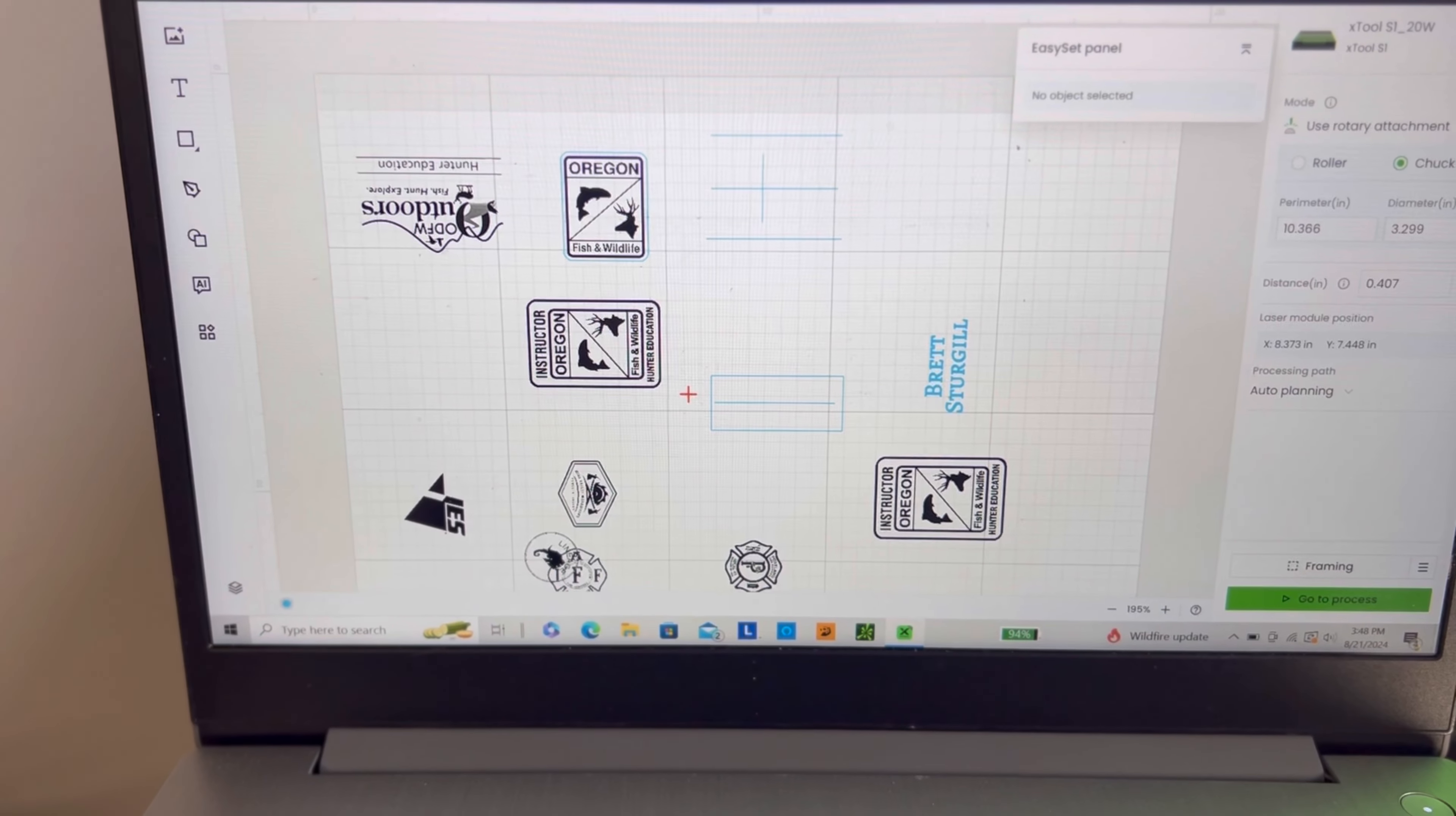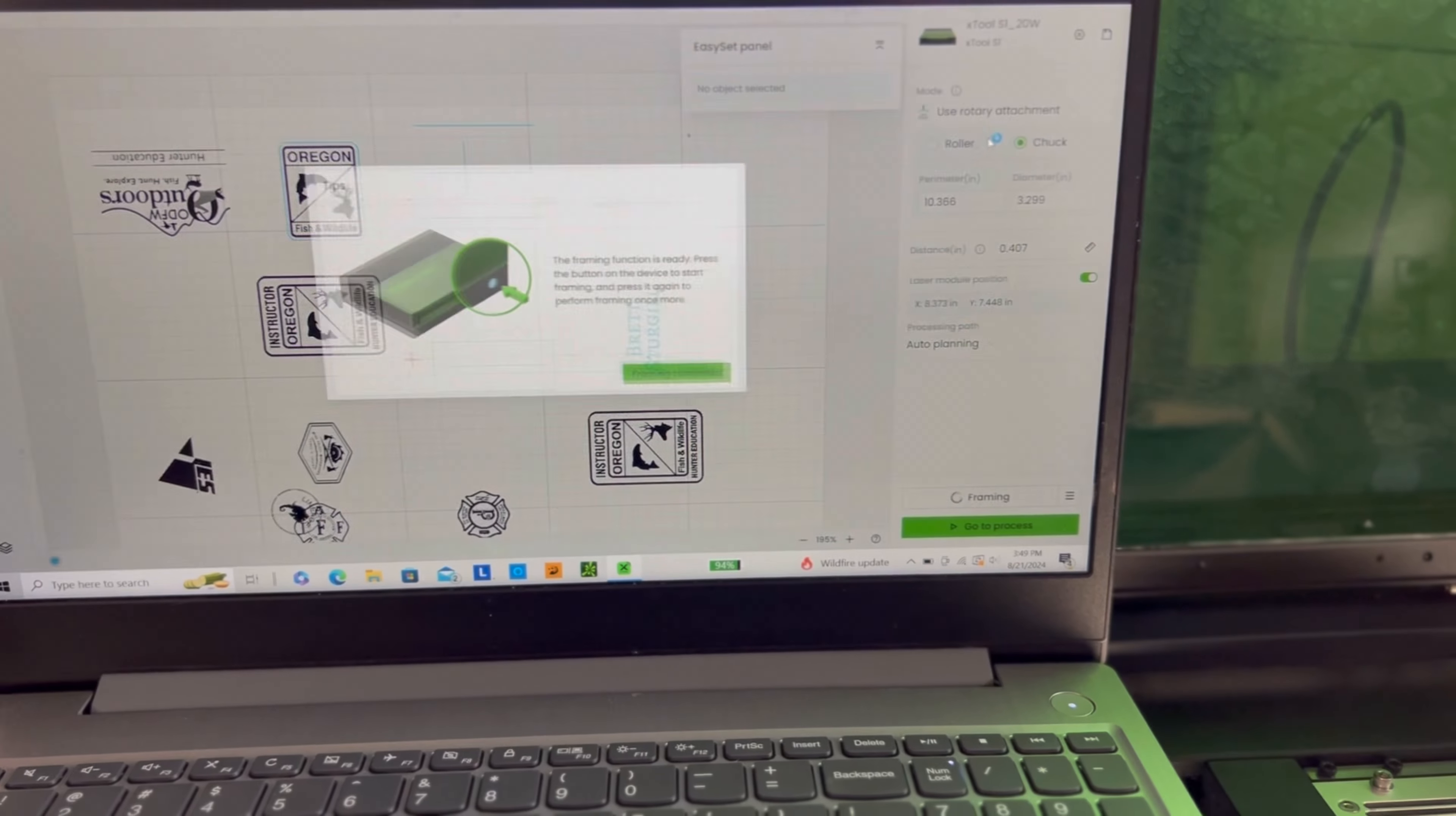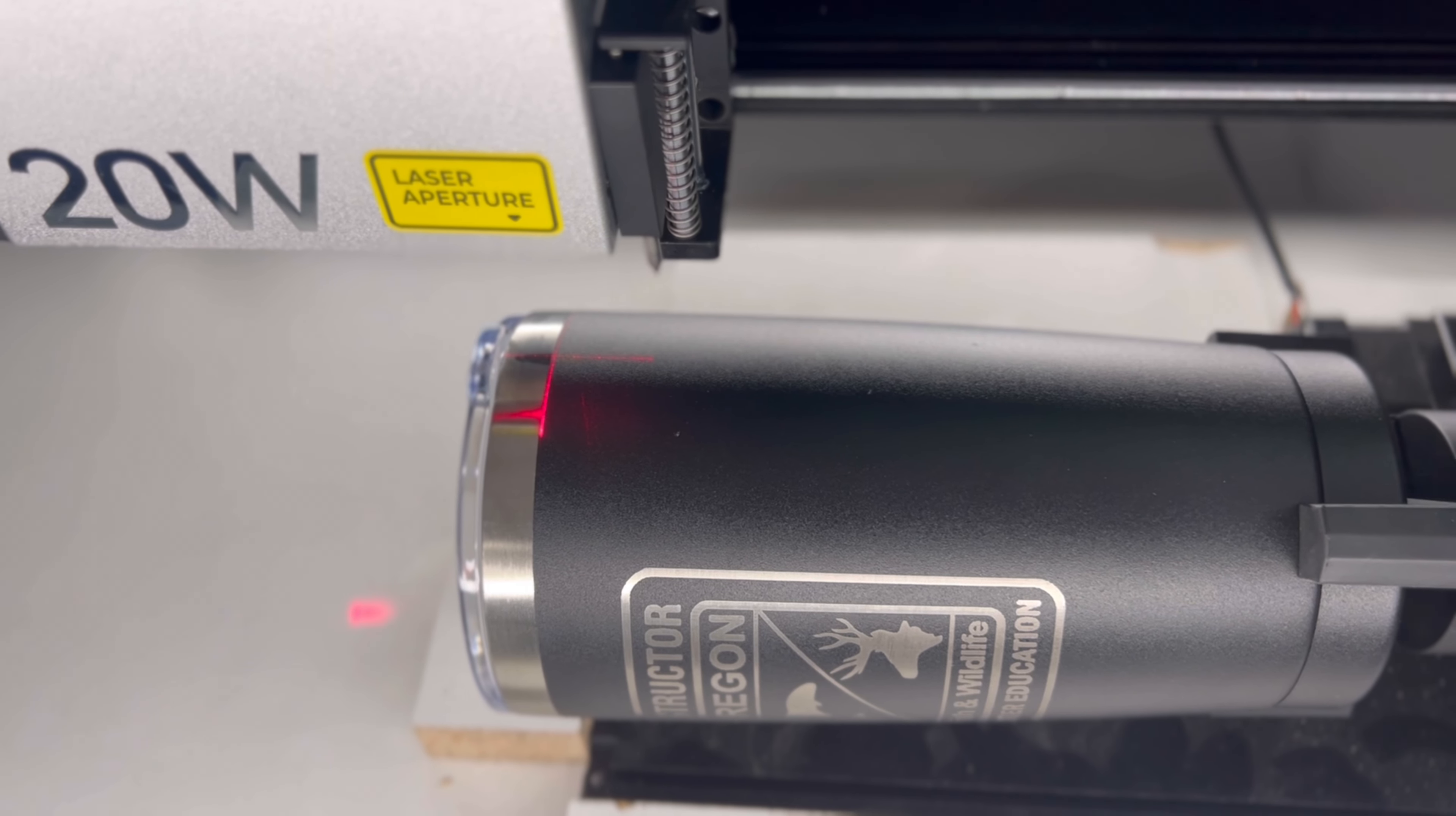Everything else, nothing's happening. So what I'm going to do now, I'm going to go to framing right here. And what I'm hoping for is that when I press this framing button, the infrared line will line up with the other line on this tumbler.